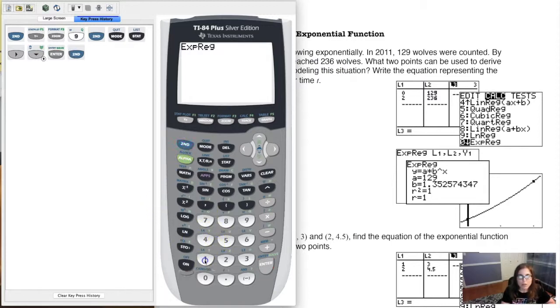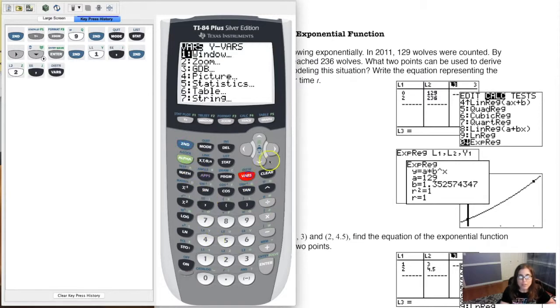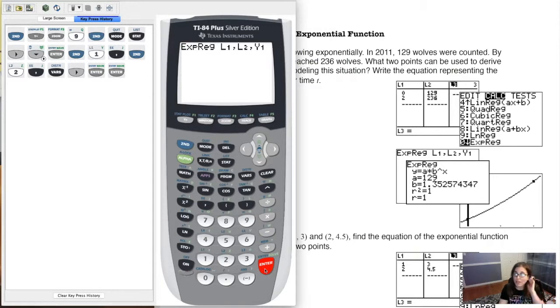And then it's very much the same program as we did for linear and eventually quadratic and cubic. So I do L1, comma, L2, comma, and let me drop that into Y1. And then when I hit enter, et voila. There's that 129, my initial value. And there's my base of 1.353. We had found that by hand. I would argue it's easier to find it using exponential regression.